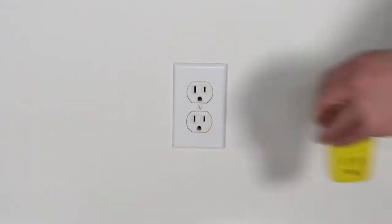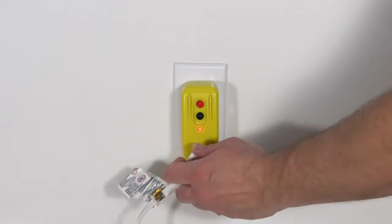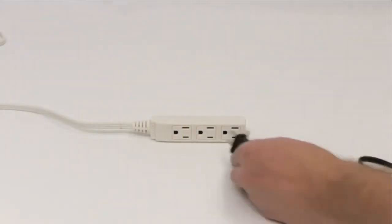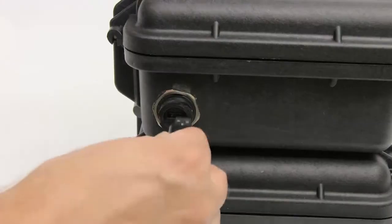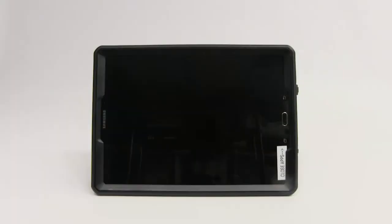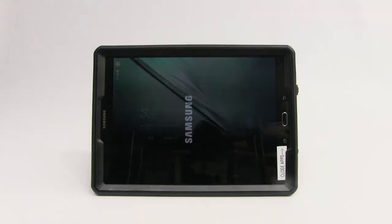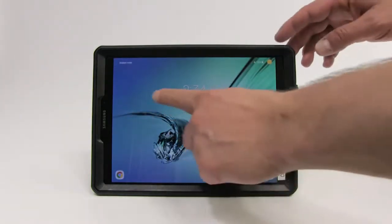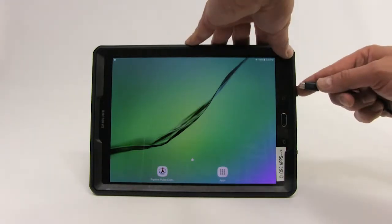Plug the GFCI outlet protector into the wall outlet. Plug an extension cord into the GFCI outlet and then plug a power cord into the extension cord. Plug the USB cable into the back of the pump. Power on the tablet by holding the power button at the top right side for approximately three seconds. Allow adequate time for the tablet to power on and display the home screen, then plug the USB cable into the tablet.